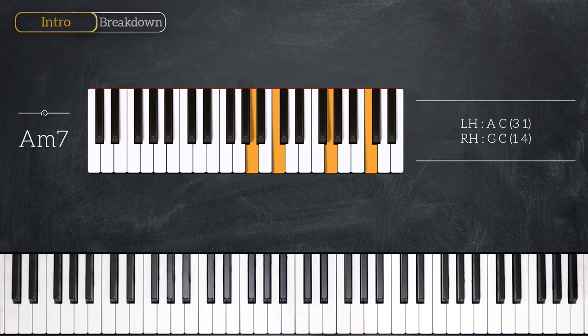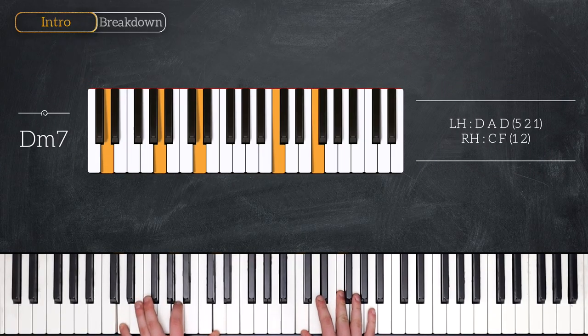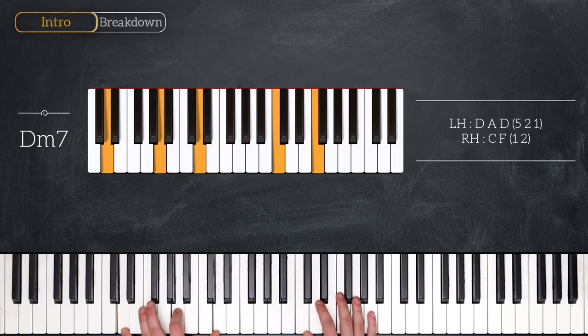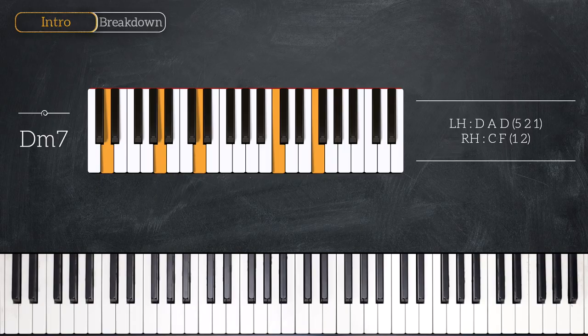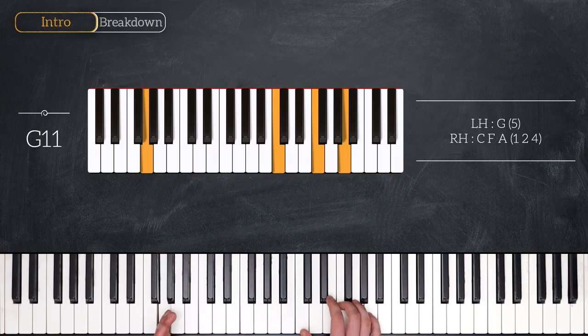Then we have D minor 7. Octave D in the left hand, with A in the middle, and in the right hand C and F. Then we have G suspended 11. G in the bass, C, F, A in the right hand.